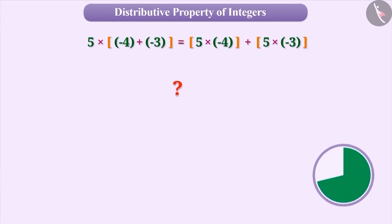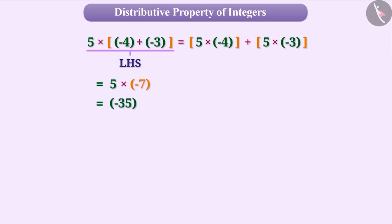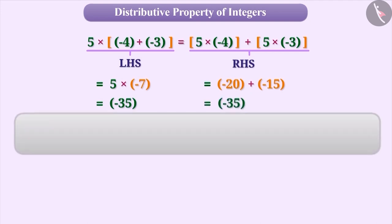Now let's find out whether 5 × (−4 + −3) is equal to 5 × (−4) + 5 × (−3). If we solve the LHS, the result will be −35. Similarly, if we find out the value of the RHS, this will also be −35. So we can say that multiplication can be distributed over addition.